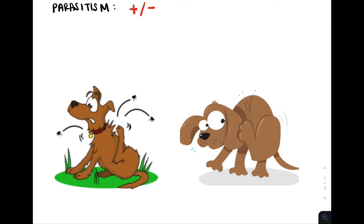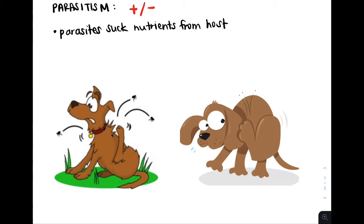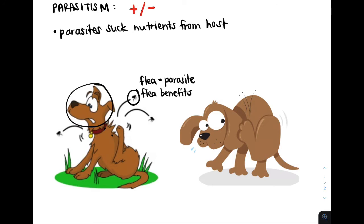Let's take a look at biotic interactions. In this example we have parasitism, which is an interaction when one species benefits and the other is harmed. Here we have fleas that are sucking nutrients from the dog. Parasites suck nutrients from hosts. The fleas are the parasites and they are benefited by the nutrients, while the dog is the host and therefore the dog is harmed.